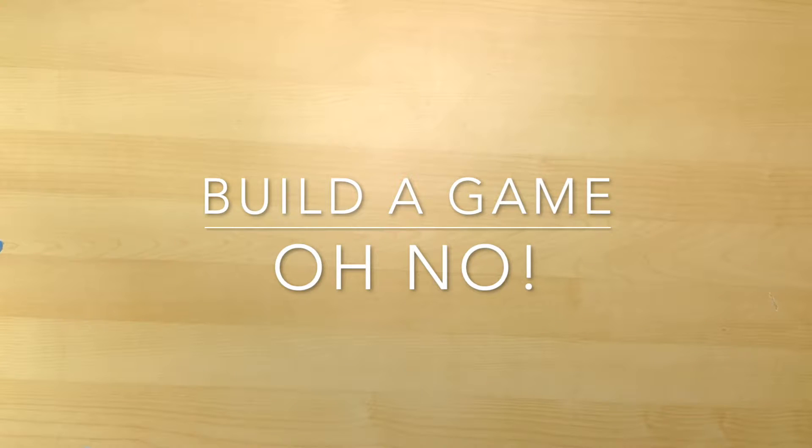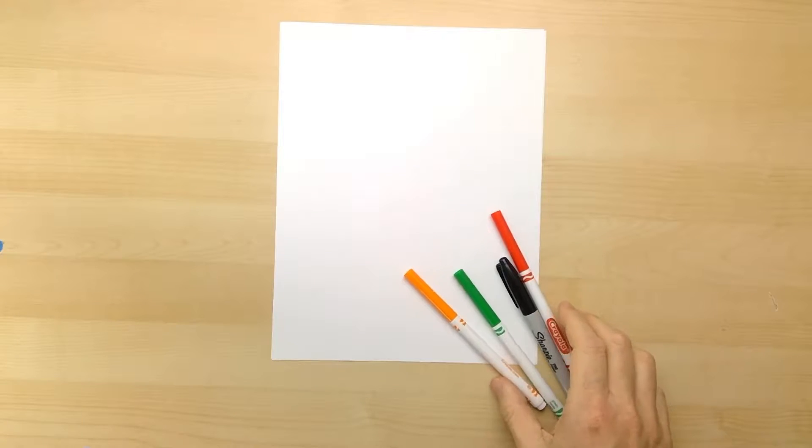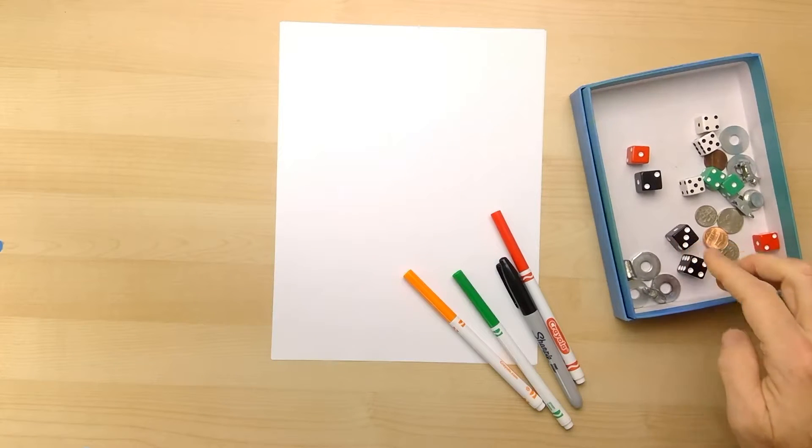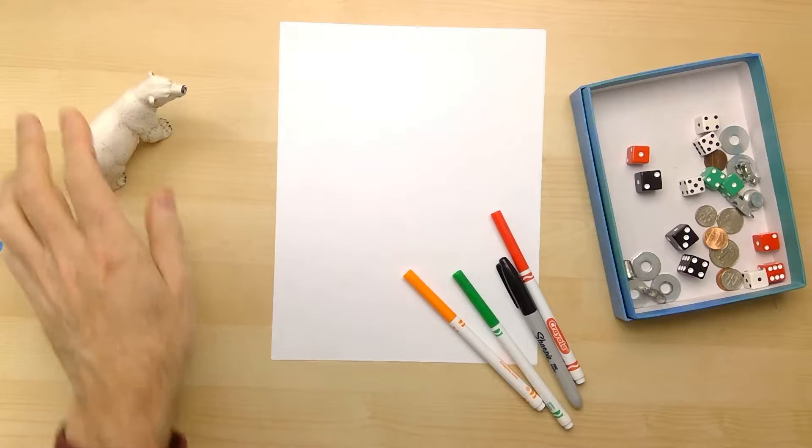Hello everybody, this is Johnny. Let's make a game together. For this game you will need some paper, some things to draw and write with, it's good to have some colors this time. You probably need some counters, it'd be good to have dice for this game and maybe a bear. So let's get started.